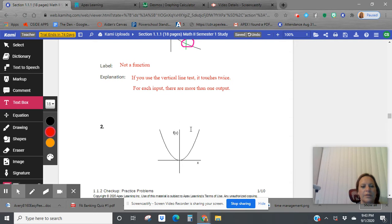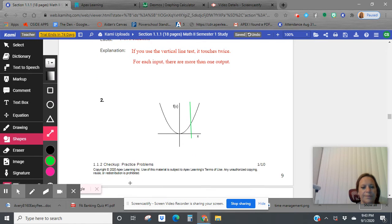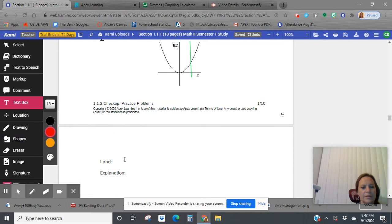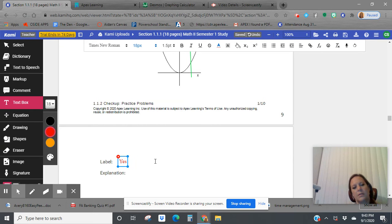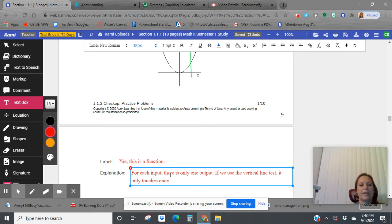Let's look at the next one. Try the vertical line test. Only touches once. The answer for if this is a function or not is on the next page. This one is a function. For each input, there is only one output. If we use the vertical line test, it only touches once. So yes, it is a function.